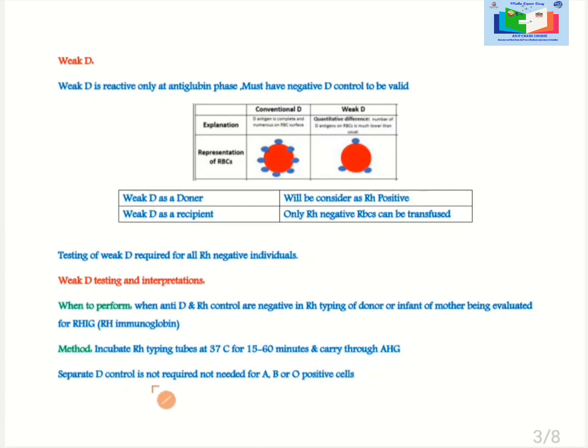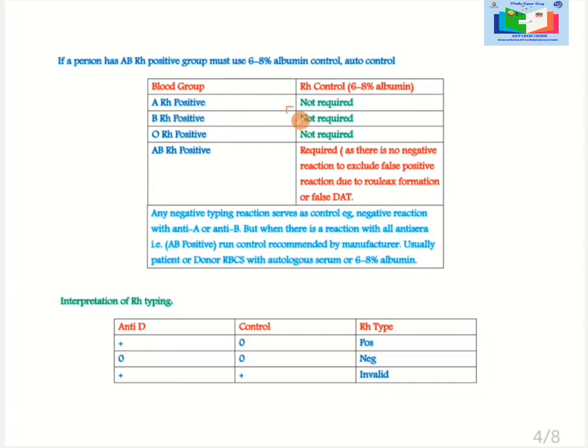Separate D control is not required for AB or O positive cells. If we look into this table for A RH positive no control is required. Similarly for B RH positive and O RH positive no control is required. But for AB positive RH control is required. Why this RH control is required for AB RH positive? Because in case there is a negative reaction to exclude false positive reaction due to the rouleaux formation or false direct anti-globulin test. Any negative typing reaction serves as a control. For example negative reaction with anti-A or anti-B. But when there is a reaction with all antisera, for example in AB positive blood group, run control is recommended by manufacturer.